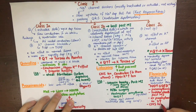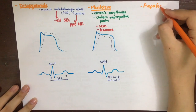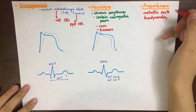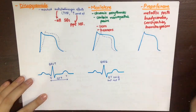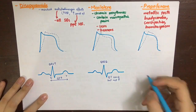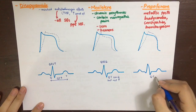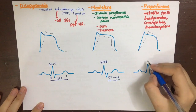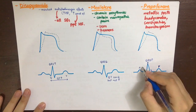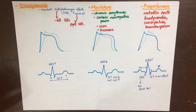Flecainide also causes CNS toxicity, and hyperkalemia will increase its toxicity. Another important class 1c drug is propafenone; its side effects include metallic taste, bradycardia, constipation, and bronchospasm. On the action potential, class 1c drugs lower the slope of phase 0 depolarization but have no effect on repolarization since potassium channels are unaffected. On ECG, there is no effect on QT interval, the QRS is prolonged significantly, and the PR interval can also be prolonged due to markedly decreased conduction velocity. This PR prolongation can even lead to AV block.